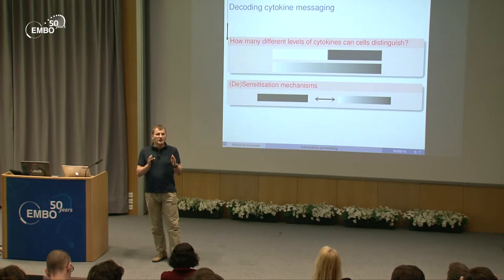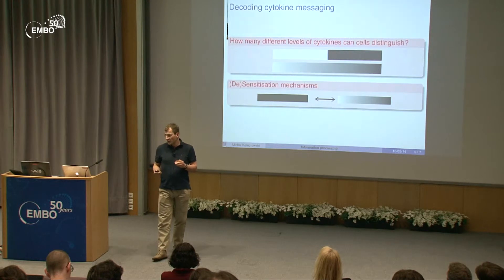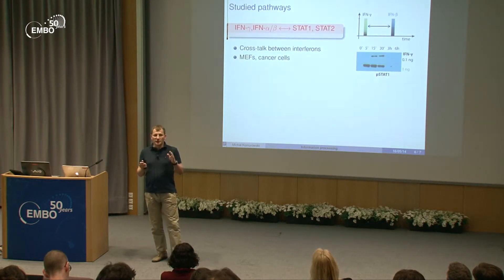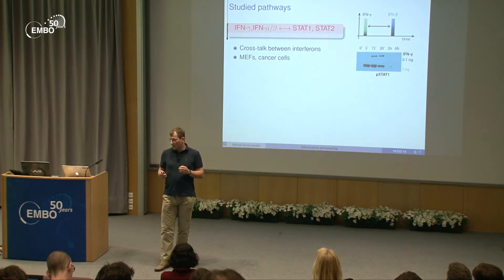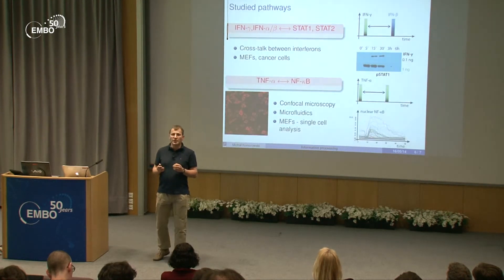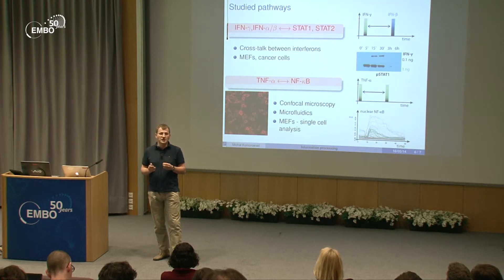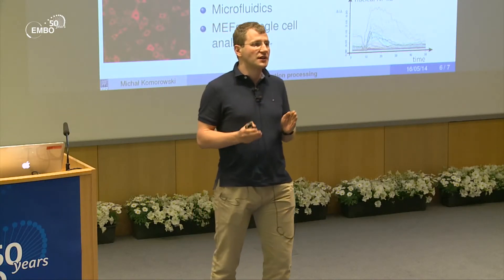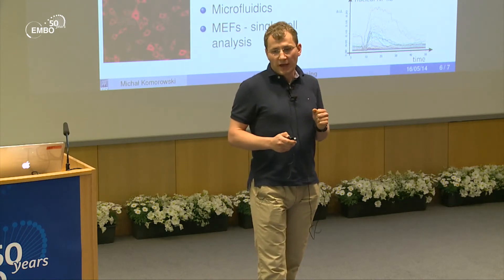Other questions we can address include what are the sensitization or desensitization mechanisms — what makes a cell go from a completely blind state to a very sensitive state. The pathways we examine using this theory are mainly the JAK-STAT pathway with interferon signaling, where we want to understand the crosstalk between interferon gamma and interferon beta, and also the NF-κB pathway with TNF stimulation, where we study temporal sensitization and desensitization mechanisms.